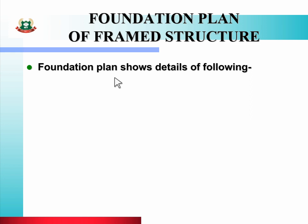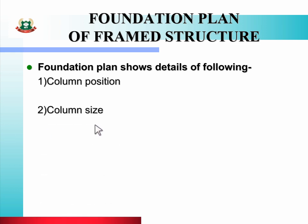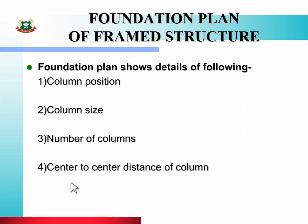Foundation plan shows details of the following: first is column position, second is column size, third is number of columns, and fourth is center to center distance of columns. Means foundation plan mein column ki detail information rehti hai — column ki position, column ka size, number of columns, aur do columns ke beech ka center to center distance. Yeh sab column se related information rehti hai.